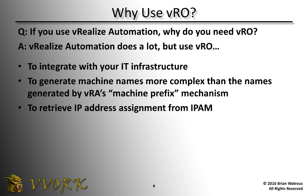I actually mentioned this one just a few moments ago — we saw it in the previous slide too. With VRA, there's a mechanism known as network profiles, and network profiles are VRA's answer to how to decide what IP address to give each machine that VRA deploys. You can use the network profile mechanism — it works and does what it advertises. But many customers already have an IPAM solution.